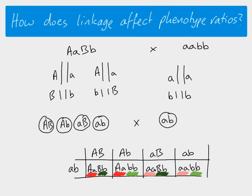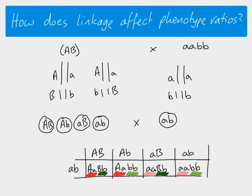Now let's see how linkage changes things. Instead of the two genes being on separate chromosomes where independent assortment can happen, if they're on the same chromosome, we write our genotypes differently — brackets tell us that these two genes are on the same chromosome. The dominant version of each allele is on the same chromosome for this individual, and in brackets the lowercase letters represent the recessive alleles. The brackets show us which alleles are linked together.